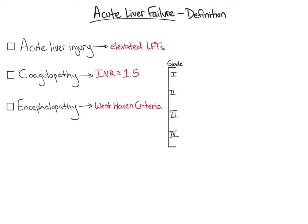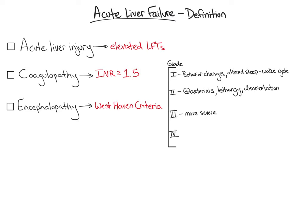Grade 1 HE is defined by subtle behavioral changes and alteration of the sleep-wake cycle. Grade 2 HE is defined by the onset of asterixis, a form of negative myoclonus defined by transient loss of postural tone, as well as lethargy and disorientation. Grade 3 HE is defined by more severe confusion, disorientation, and somnolence. Finally, grade 4 is defined by coma.